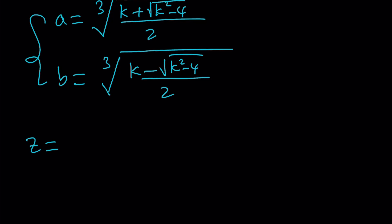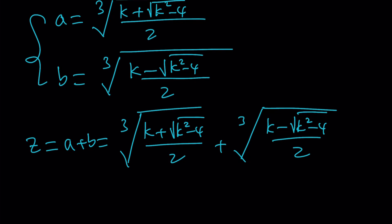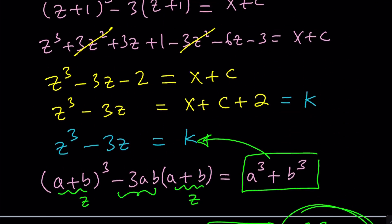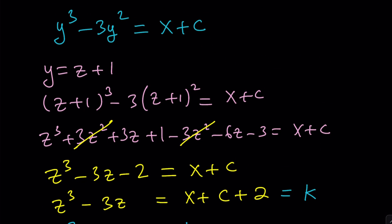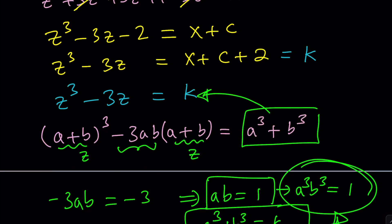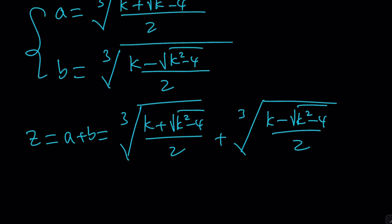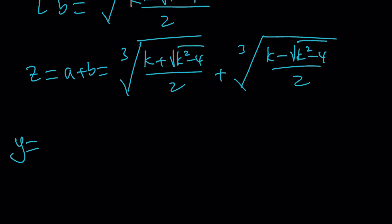So z is a plus b, which is the cube root of k plus the square root of k squared minus 4, divided by 2, plus the cube root of k minus the square root of k squared minus 4, over 2. So we found z, but we do need to find y. Let's go back and see how we can find y from here. y is z plus 1, so we're just going to add 1 to this value to find y. But what is k?